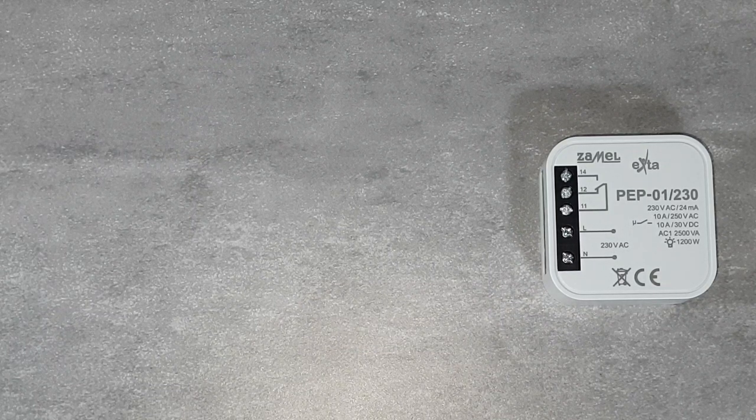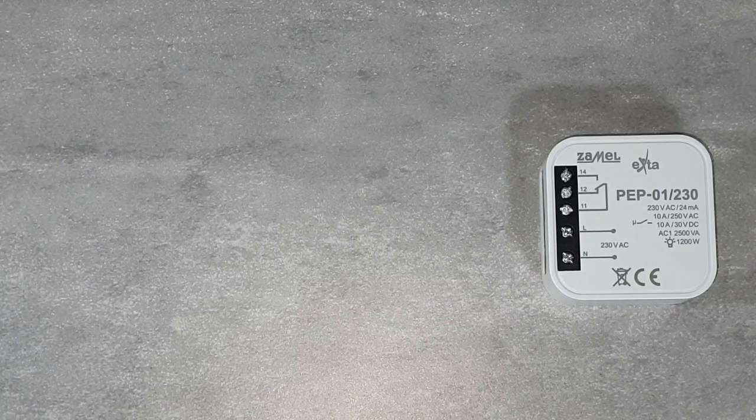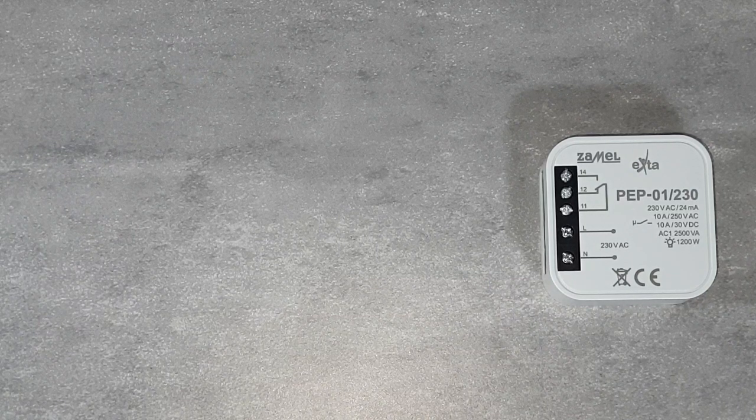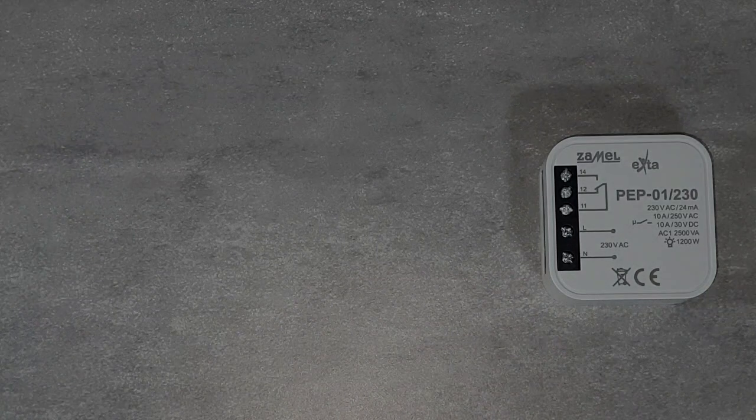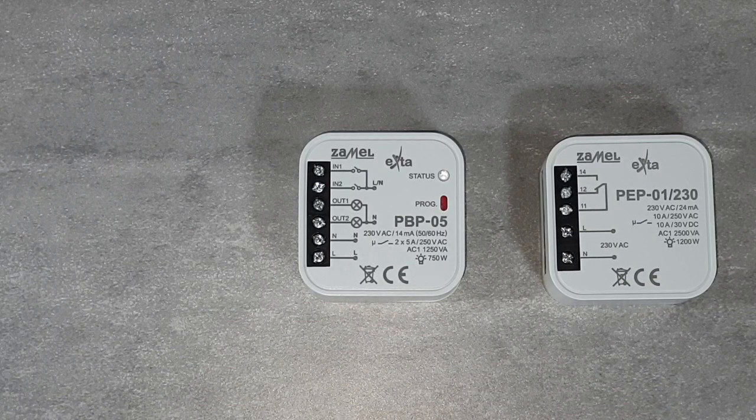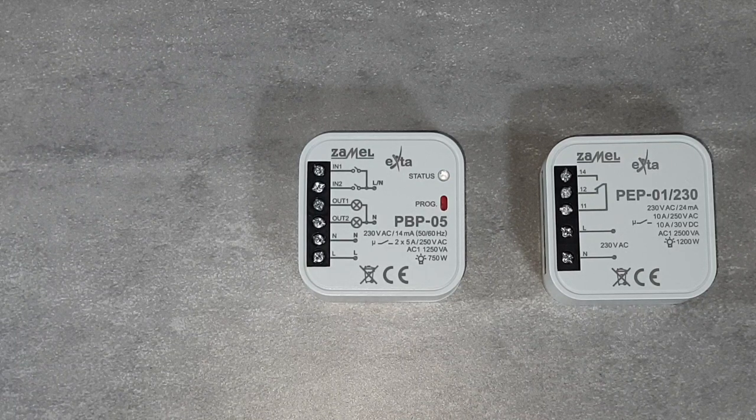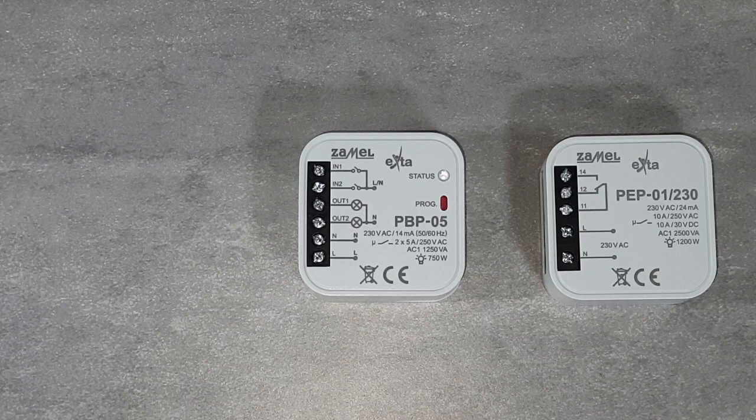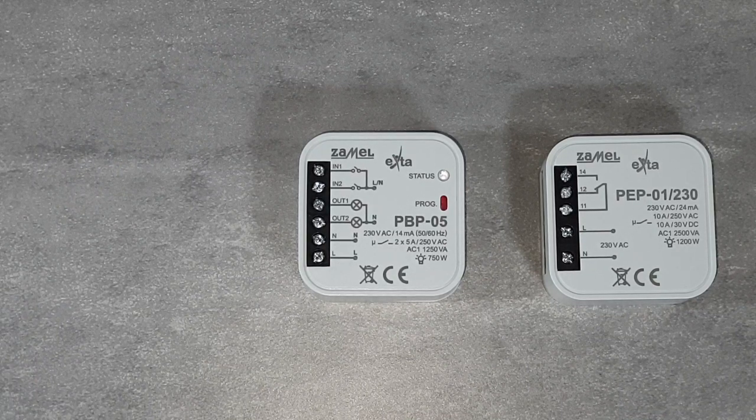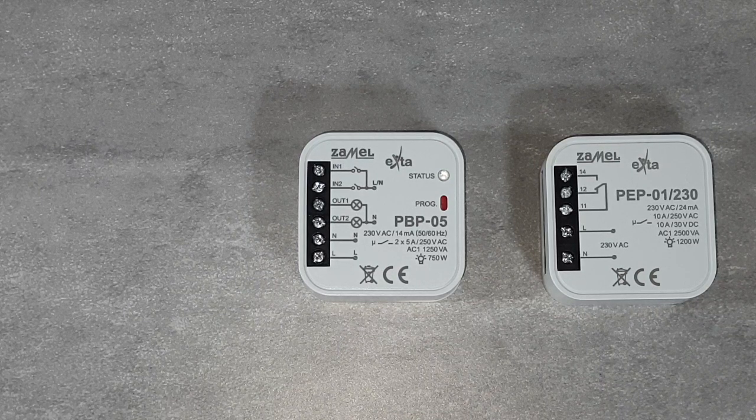In order to show the operation of the PEP01230 relay, lighting control system with two luminaires will be prepared. Two channel flush mounted PBP05 will be the lighting control relay. The device allows control of switching on and off for two lighting circuits. It's independent control by using several single pole buttons connected in parallel.